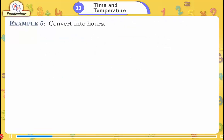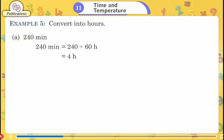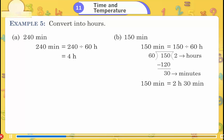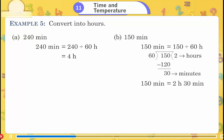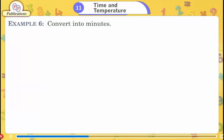Example 5: Convert to hours. A) 240 minutes = 240 ÷ 60 = 4 hours. B) 150 minutes = 150 ÷ 60 = 2 hours 30 minutes.